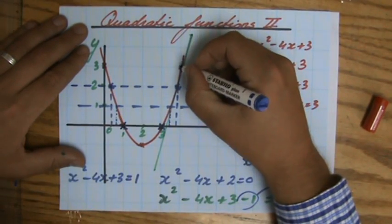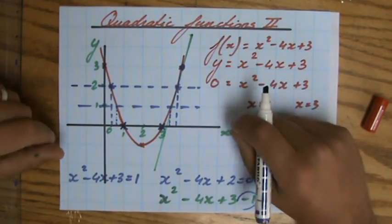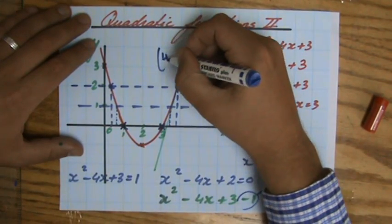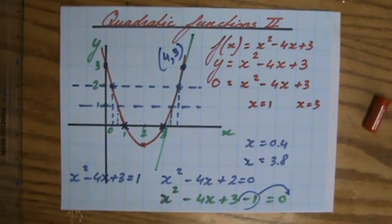Well, the easiest one is the one where you had to draw your tangent at. So that is point 4, 3. You see that? So that is one coordinate.